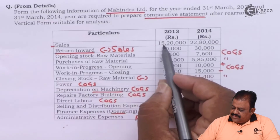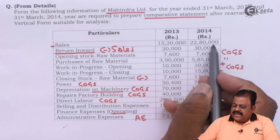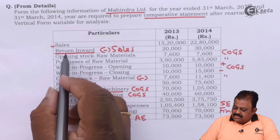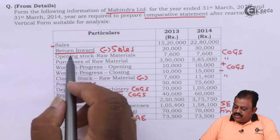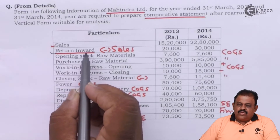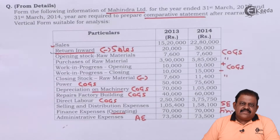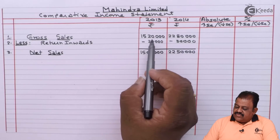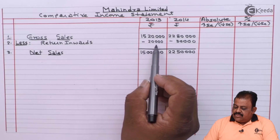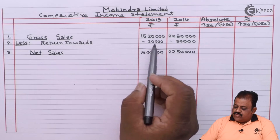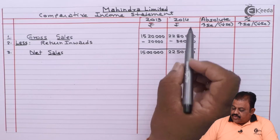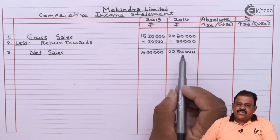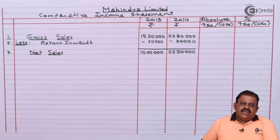Sales are 15 lakh 20,000 and 22 lakh 80,000. There are sales returns, which we are required to deduct to arrive at net sales. Gross sales of 15 lakh 20,000 minus returns of 20,000 gives net sales for 2013 of 15 lakhs. Net sales for 2014 are 22 lakh 50,000. From this we are required to deduct cost of goods sold.